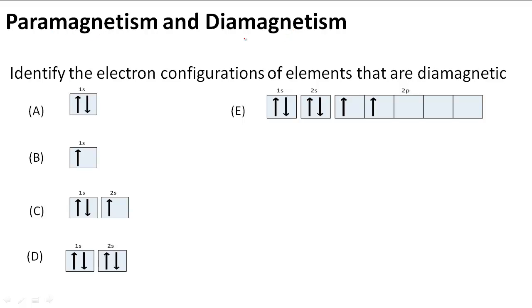Paramagnetism and diamagnetism. Identify the electron configurations of elements that are diamagnetic.